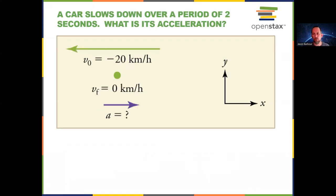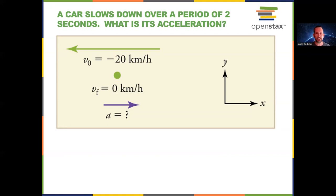Here we have a car moving to the left at negative 20 meters per second, and it slows down to a velocity of zero. The acceleration has to be in the opposite direction of the velocity, so we expect it to come out positive. Final velocity of zero minus negative 20 meters per second gives positive 20. If that happens in two seconds, then positive 20 divided by two seconds gives positive 10 meters per second squared.